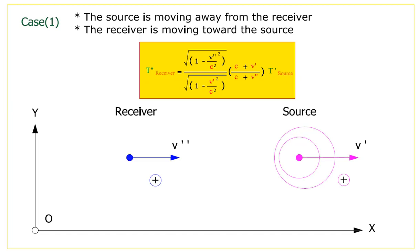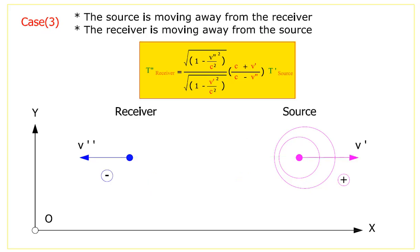We will summarize the four cases pictorially. Case 1: the source is moving away from the receiver and the receiver is moving toward the source. Case 2: the source is moving toward the receiver and the receiver is moving toward the source. Case 3: the source is moving away from the receiver and the receiver is moving away from the source. Case 4: the source is moving toward the receiver and the receiver is moving away from the source.